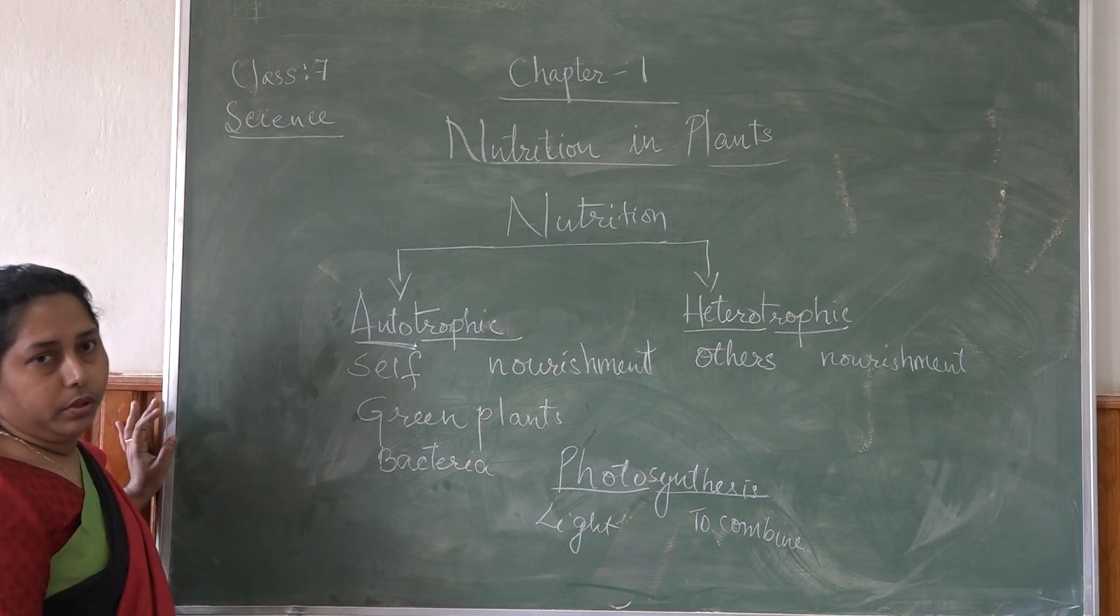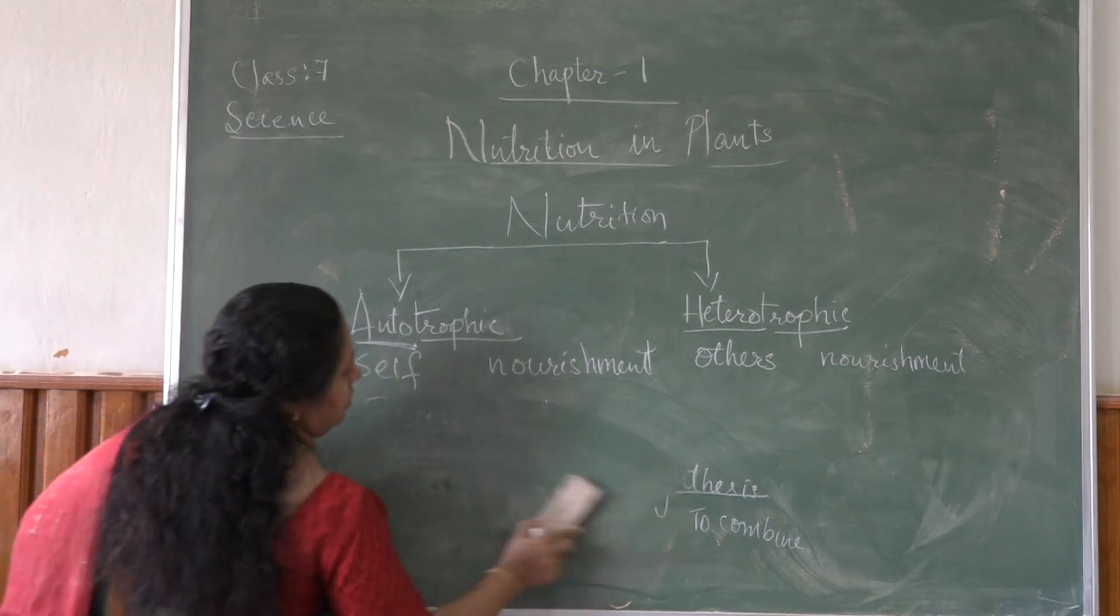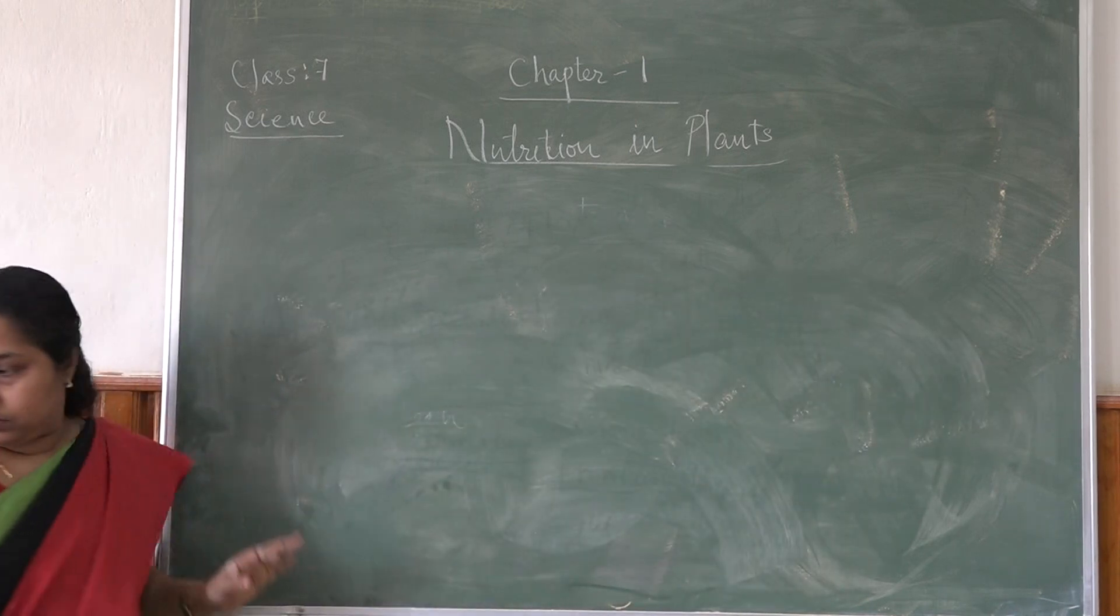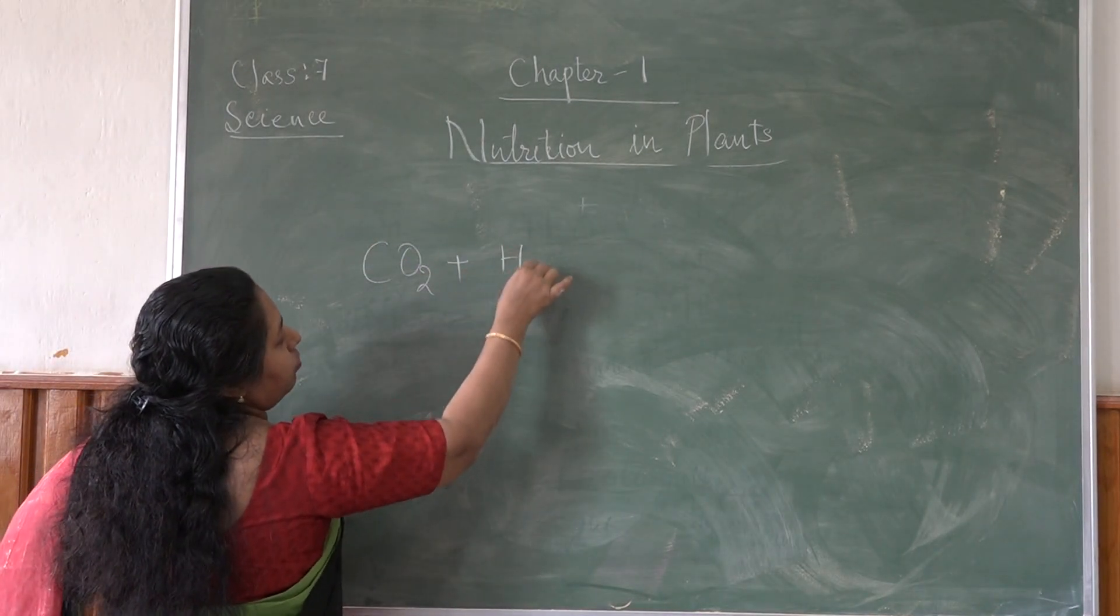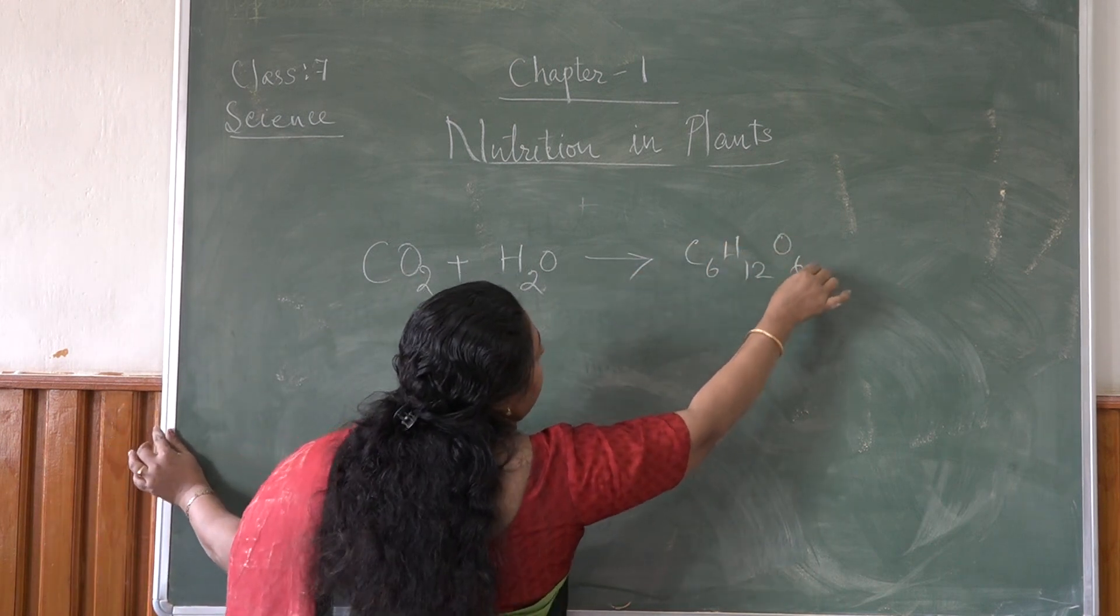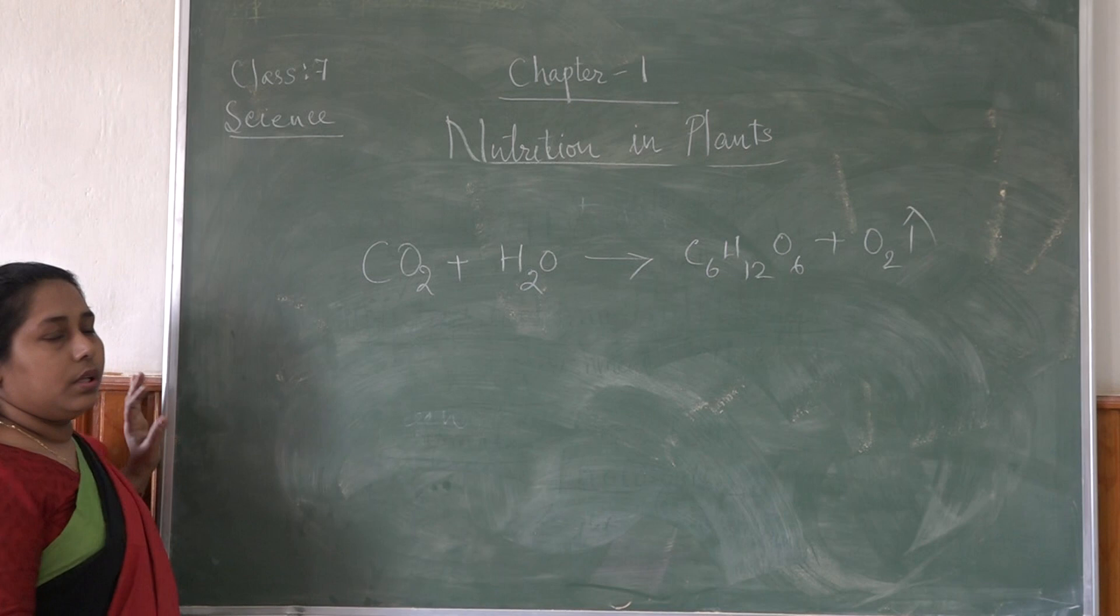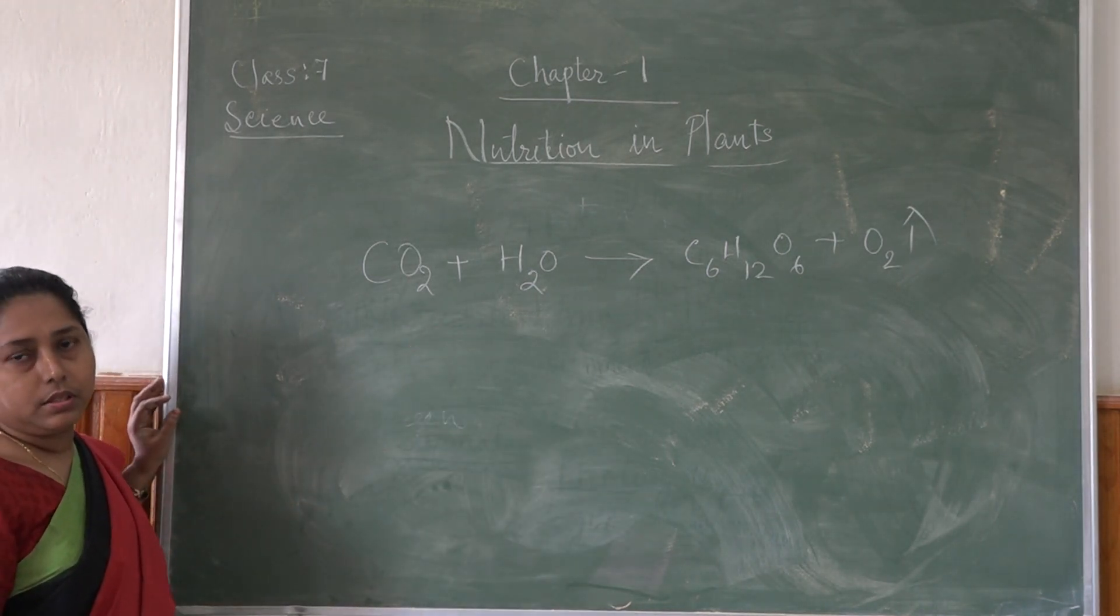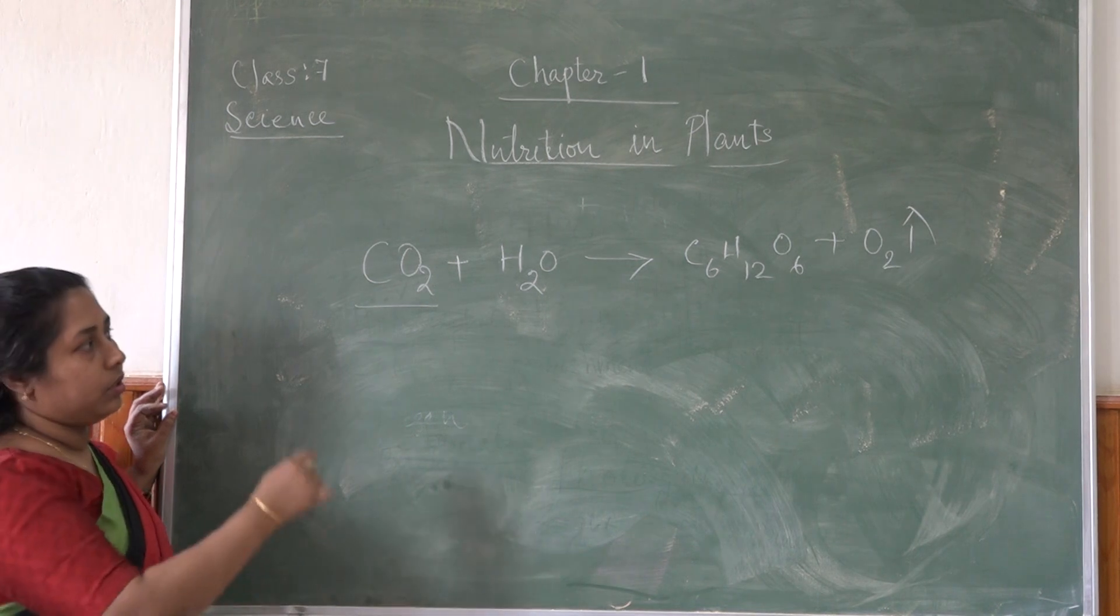So photosynthesis is a process. Now I will write the chemical formula of photosynthesis. Carbon dioxide plus water gives C6H12O6 plus oxygen gas. So carbon dioxide reacts with water and produces starch. Now we have to study about the materials required for photosynthesis.